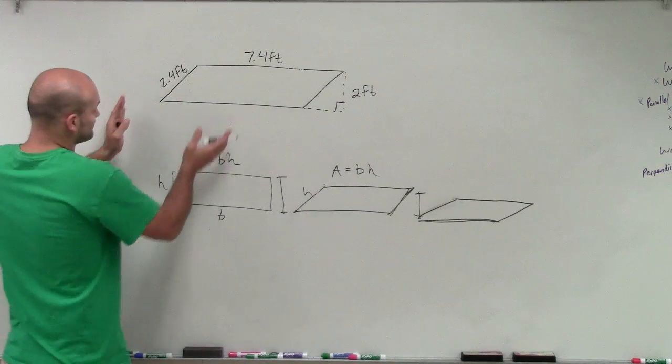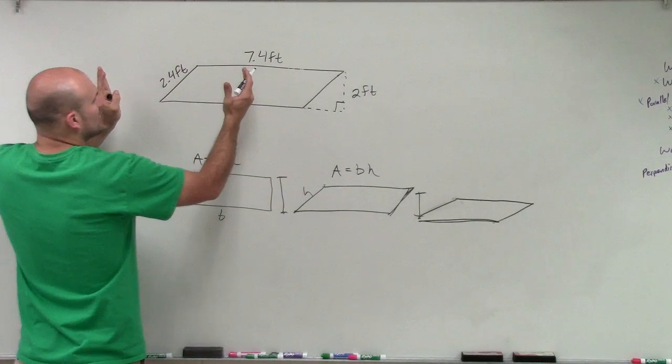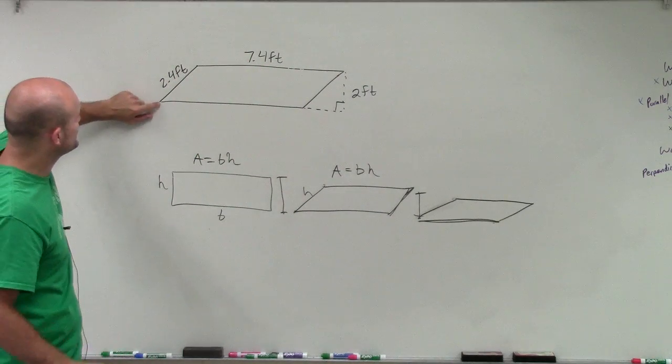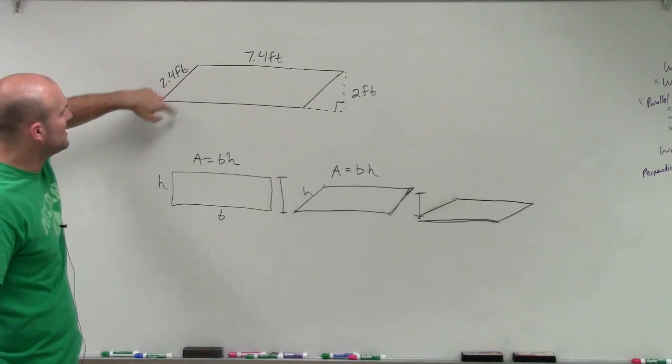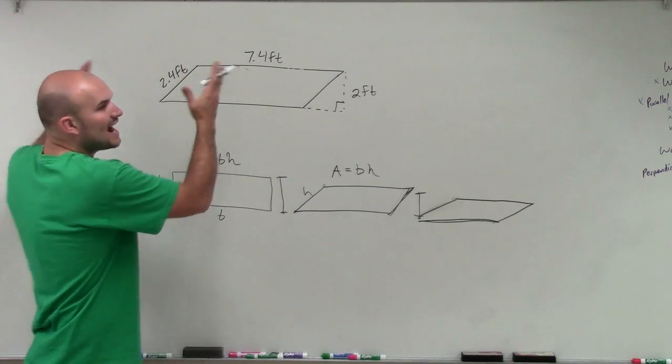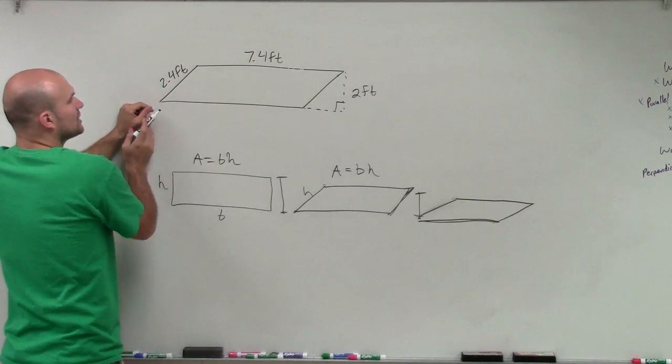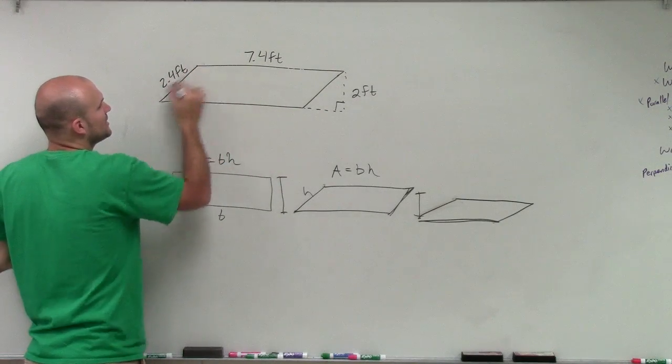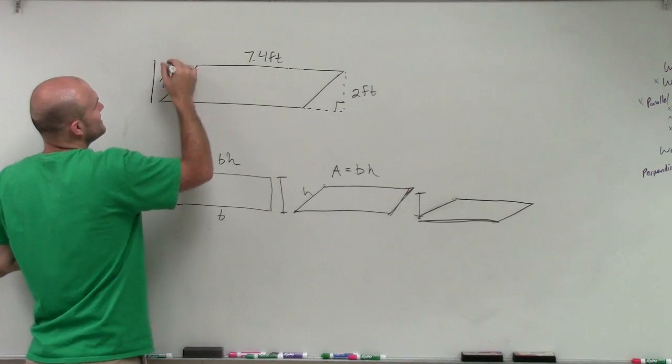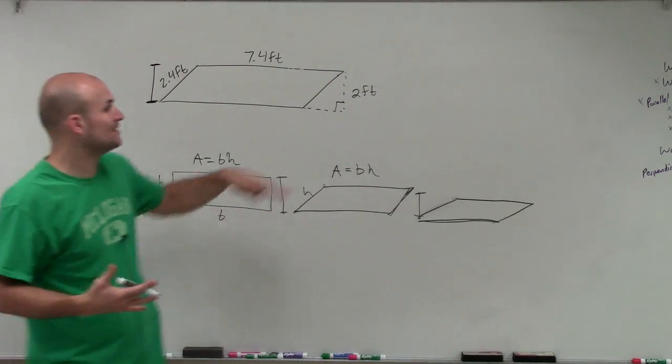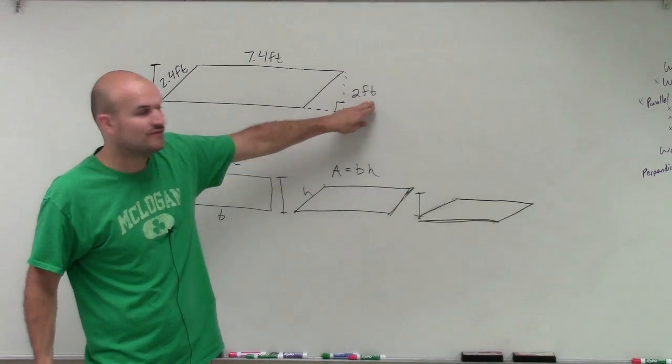So when looking at this, if I was to turn this parallelogram up and I'd make it a rectangle, 2.4 would be the height, because that would be the distance from the base to the bottom or the base to the top. However, since I've turned this and I've angled it, 2.4 is no longer the height. That is just the distance from here to here. I need to find the distance from the top to the bottom of my parallelogram. And thankfully, we're given that by a distance of 2 feet.